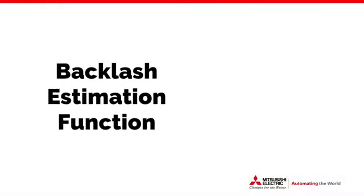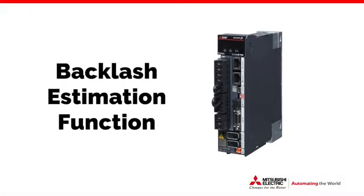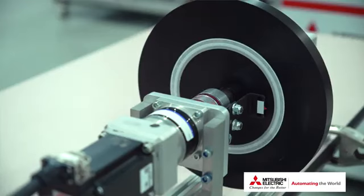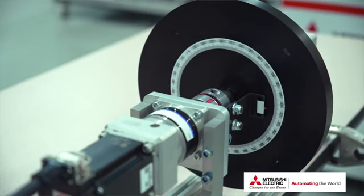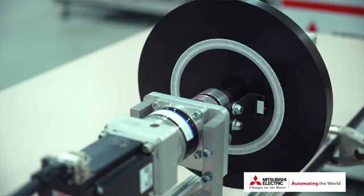Mitsubishi Electric's solution to this problem is our backlash estimation function, a standard feature on our MR-J5 servo amplifiers. The backlash estimation function rotates the servo motor back and forth at four points along the available travel of the machine. By measuring the motor feedback, the servo amplifier is able to approximate what the backlash of the machine is. This whole process can be done in just about two minutes and just a few clicks. Let's take a look at what that process looks like.